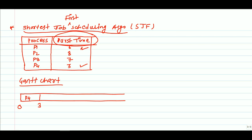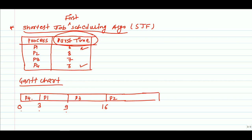After P4, comparing the remaining processes P1, P2, and P3, the burst time of P1 is less than P2 and P3, so P1 is executed next with a burst time of 6 milliseconds — giving us 3 + 6 = 9 on the Gantt chart. Then P3, with burst time 7, is taken next: 9 + 7 = 16.